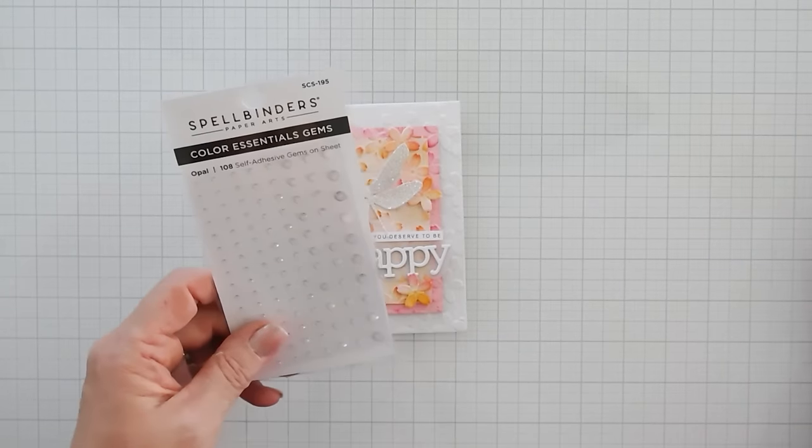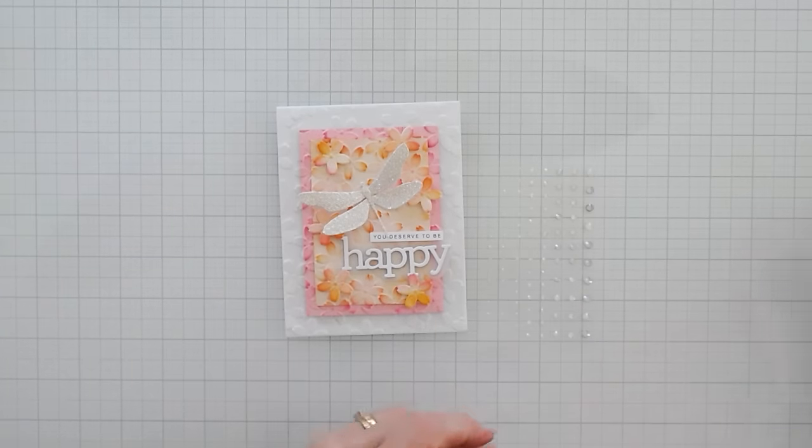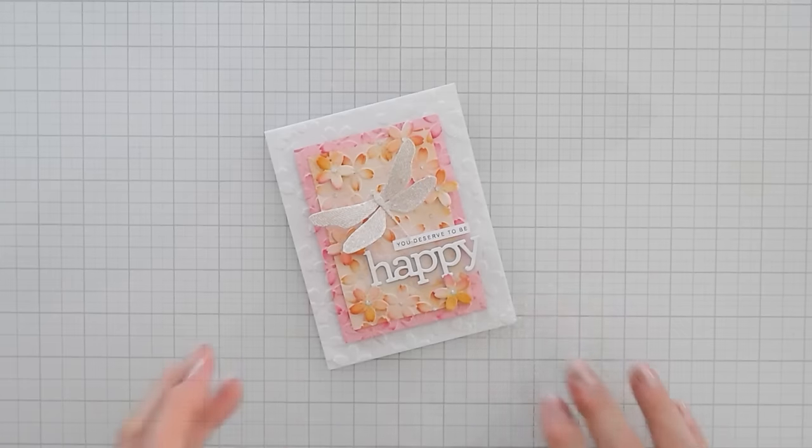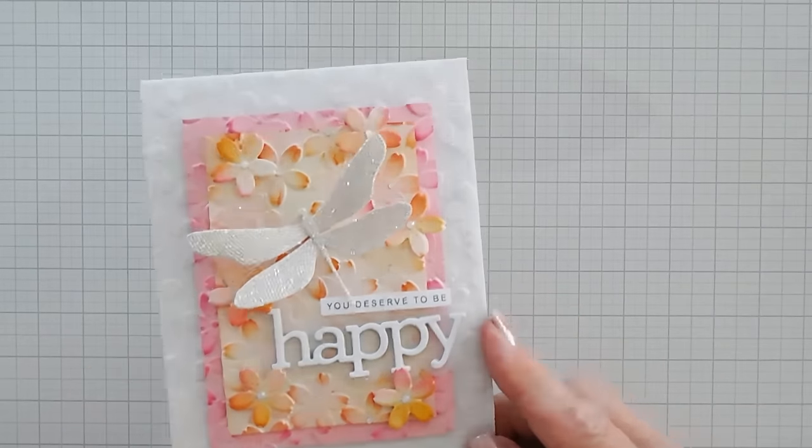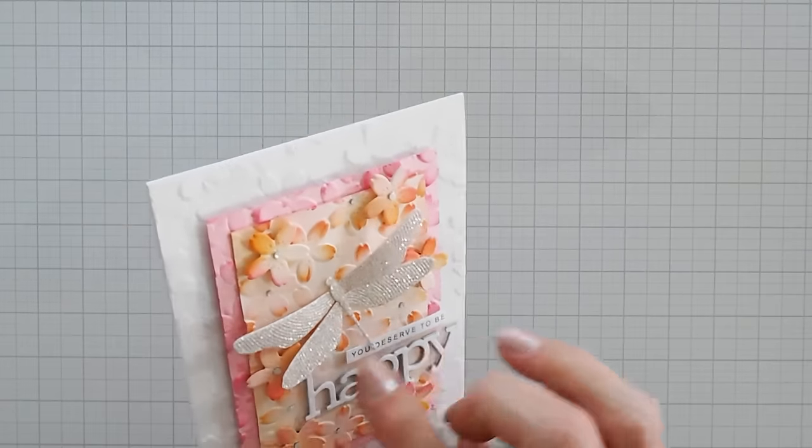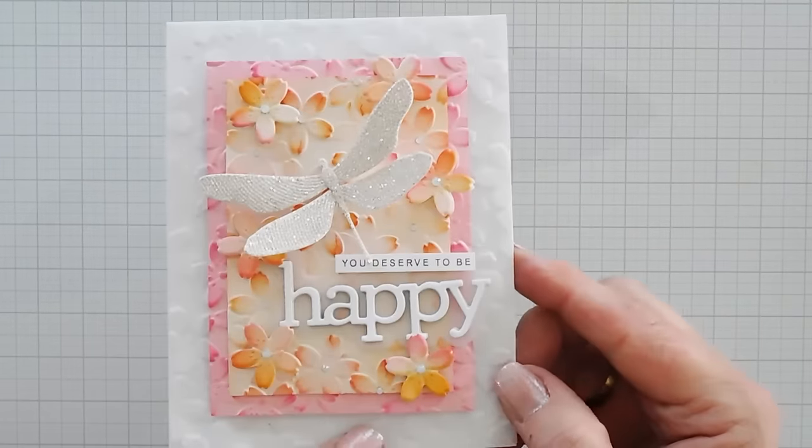And then for finishing touches, I'm going to be using my Spellbinders Opal Gems. These are real subtle. And I'm just going to add a few to the flower centers. And I think I got all the flower centers. The ones that we popped up, I put a little bit bigger gem. And then the ones in the background, I added the teeny tiny gems.